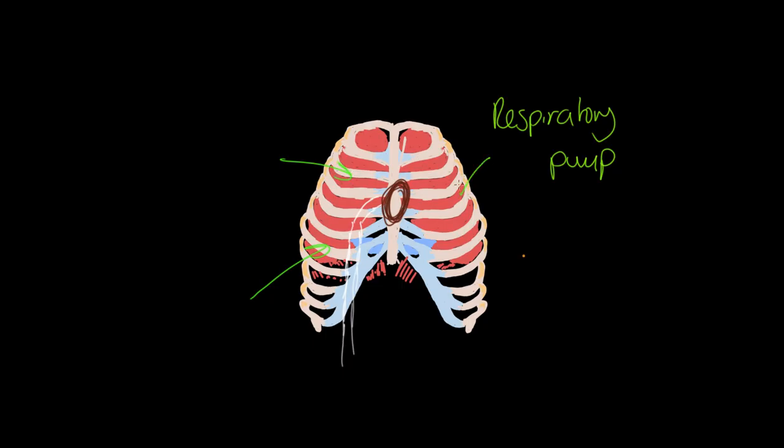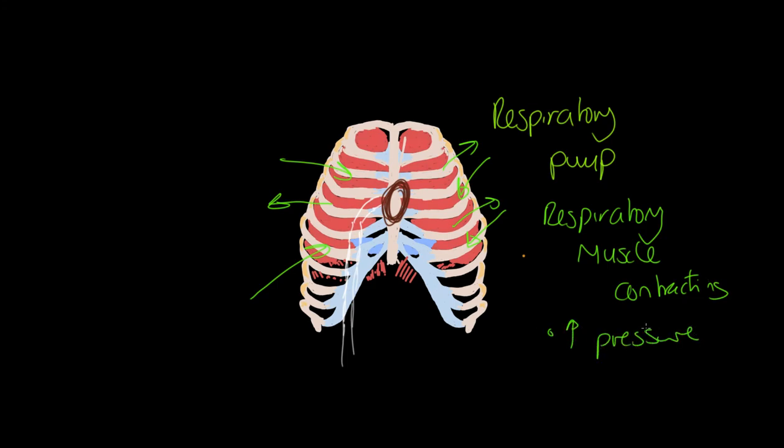As the thoracic cavity falls and moves in during expiration and rises and moves out during inspiration, we're getting a change in pressure in this respiratory environment. This is effectively from respiratory muscles contracting, think about the diaphragm. Respiratory muscles are contracting and they are better able now to increase the pressure within the veins and therefore squeeze that blood back to the heart.